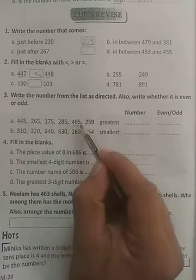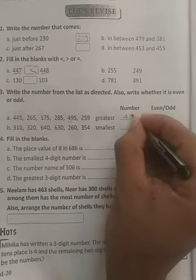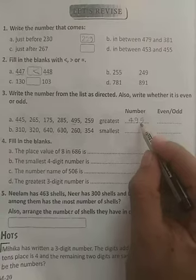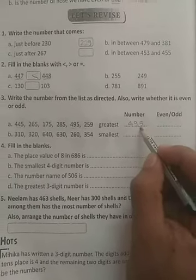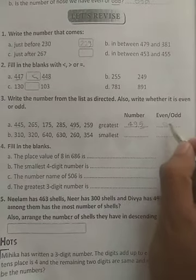Here 4, 4 is there. Here 4, 9 is there. So 495 is greatest, right? 495. Now just tell me, this is even or odd? It is odd. Just see the ones place. Here 5 is there, right? And 5 is an odd number, so this 495 is odd.